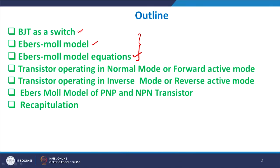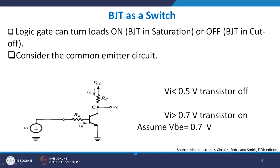We will look at the normal mode of operation of the transistor, which we have already seen, and then the inverse mode. Then we will put the Ebers-Moll model for NPN as well as PNP transistors and recapitulate the whole thing once again. BJT as a switch has been used for transistor-transistor logic, which is basically TTL.